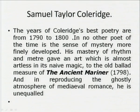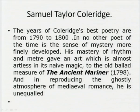When we come to Coleridge, we find another giant. His best poetry is from 1790 to 1800. In no other poet of the time is the sense of mystery more finely developed — he is completely different from Wordsworth. Here we find the sense of mystery, magic, and mastery of rhythm and metre gave him a completely different niche in English poetry, especially in the old ballad manner in the Ancient Mariner.